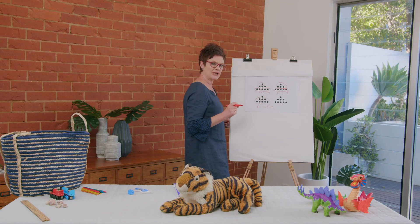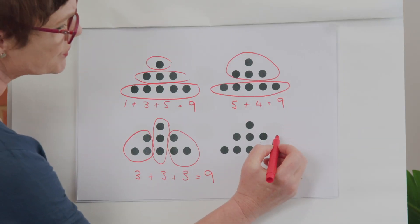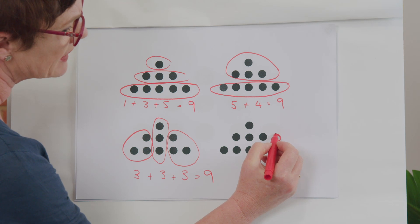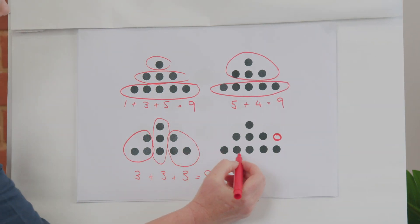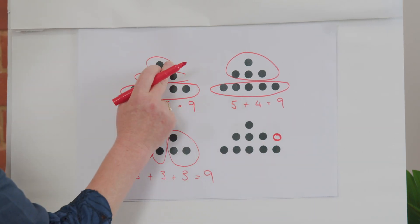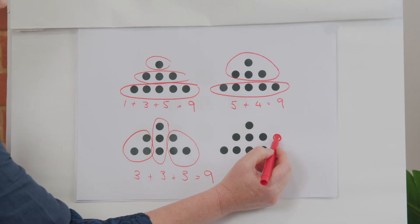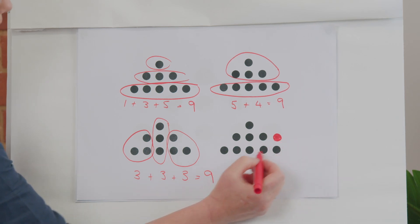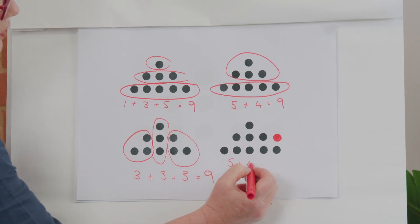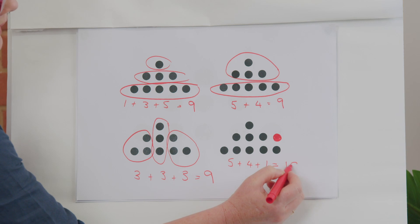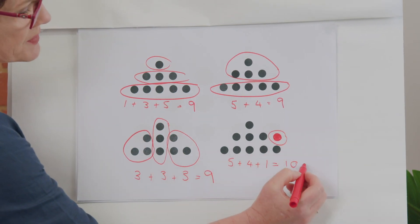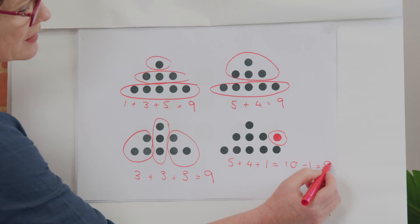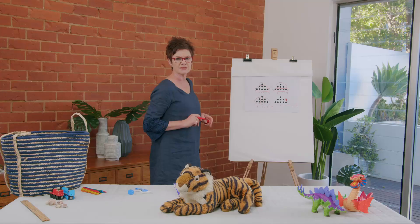Or maybe you saw something that was missing. Maybe you saw a five, a three, and a one, but noticed one dot was missing and knew that would make five plus four plus one — our magic friend ten — but with one missing. That's quite a tricky way of looking at it too.